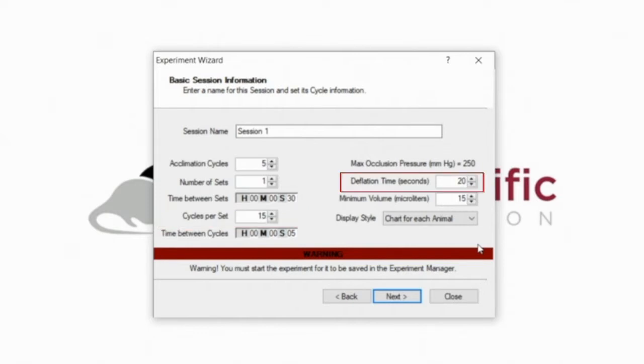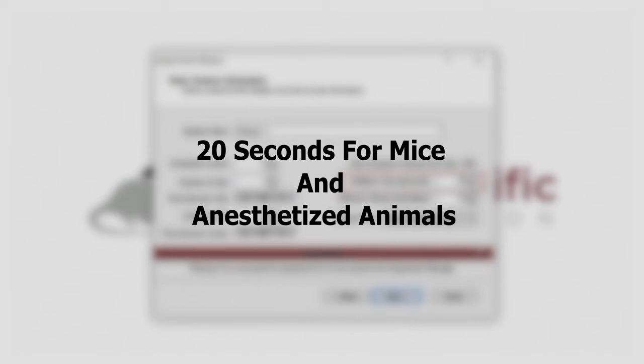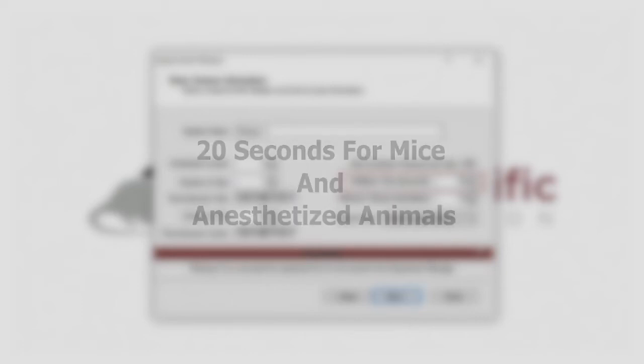Deflation time is an important setting, as it affects the sensitivity of your measurements. Select a deflation time of 20 seconds if you are using mice or if your animals are anesthetized, and a deflation time of 15 seconds for conscious rats.